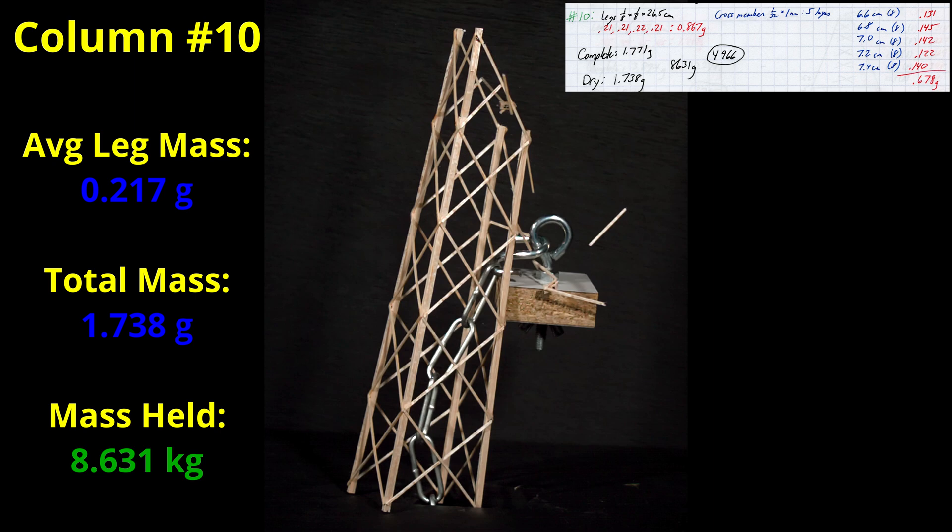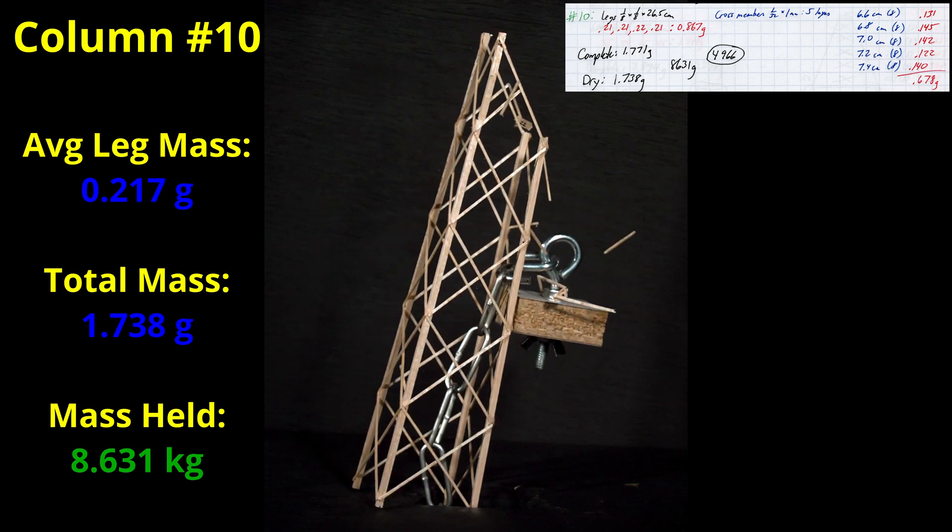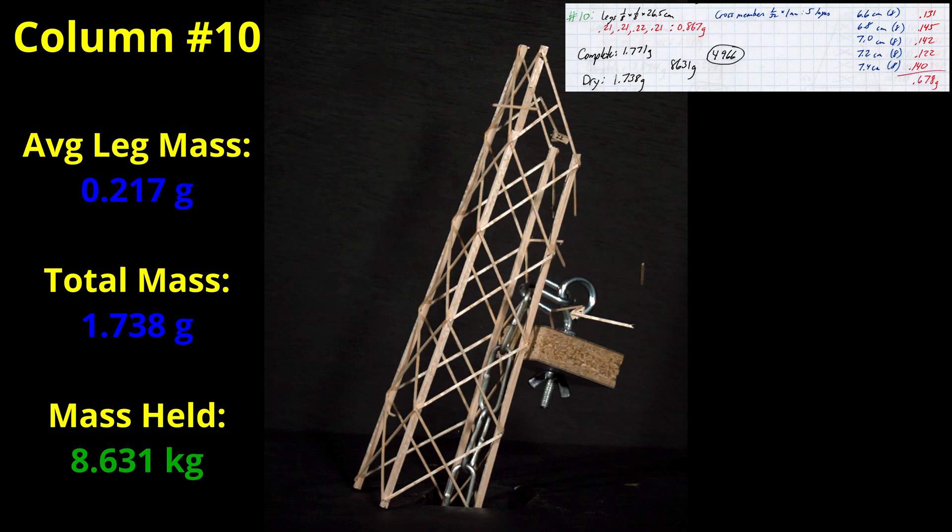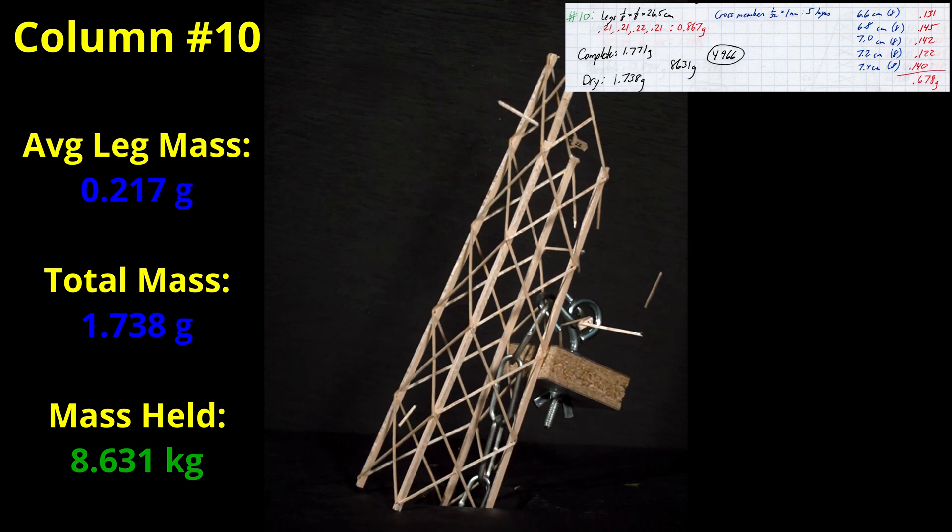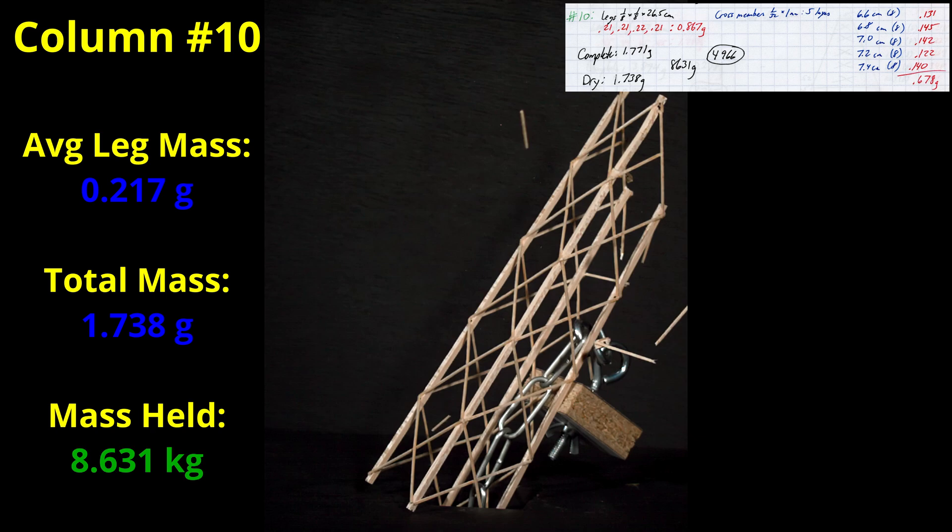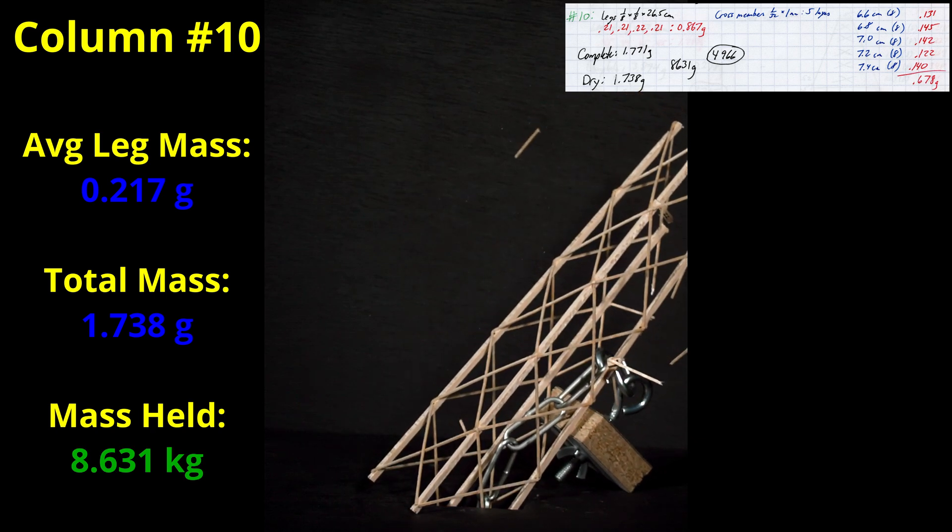This was probably the most disappointing result of all my column builds and it showed how weak these legs could be. If you recall, build number 2 had an average leg mass lighter than this build of 0.215 grams and it held 15.862 kilograms. My conclusion is that these light legs are very inconsistent, so if you use them you really need to pre-test to guarantee your results.